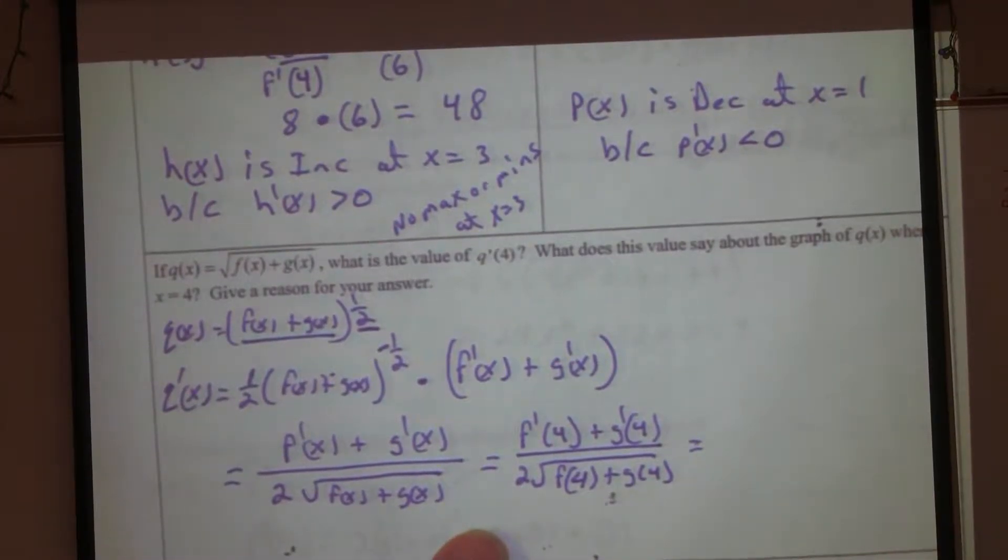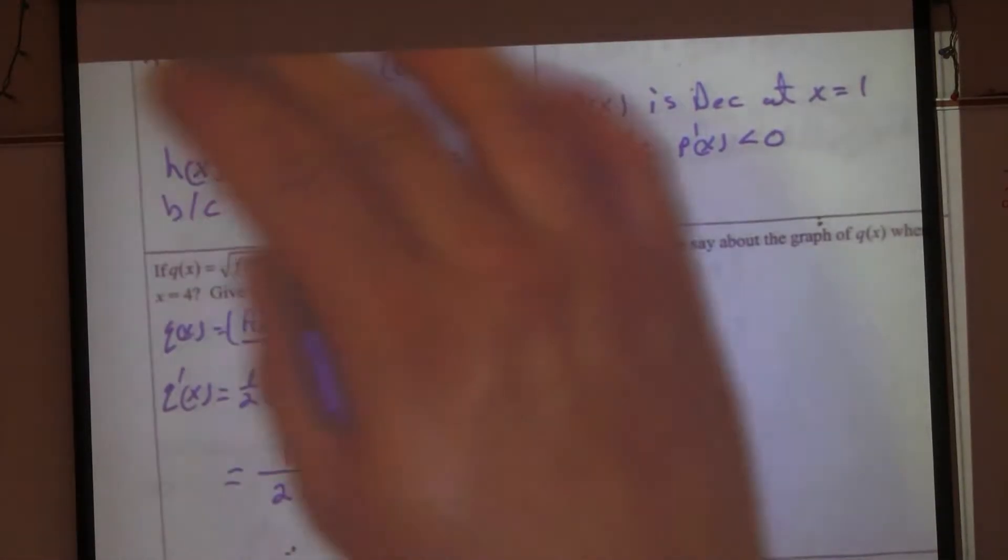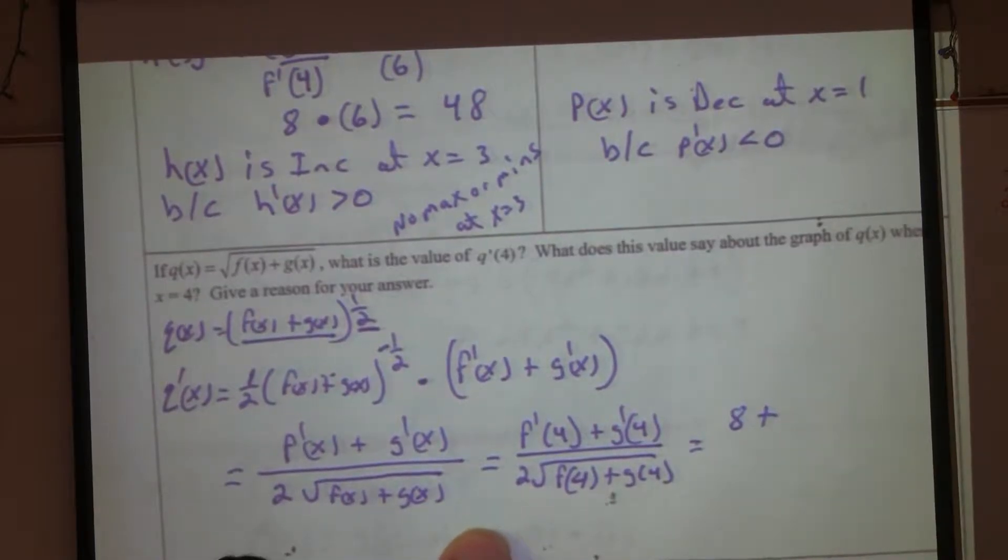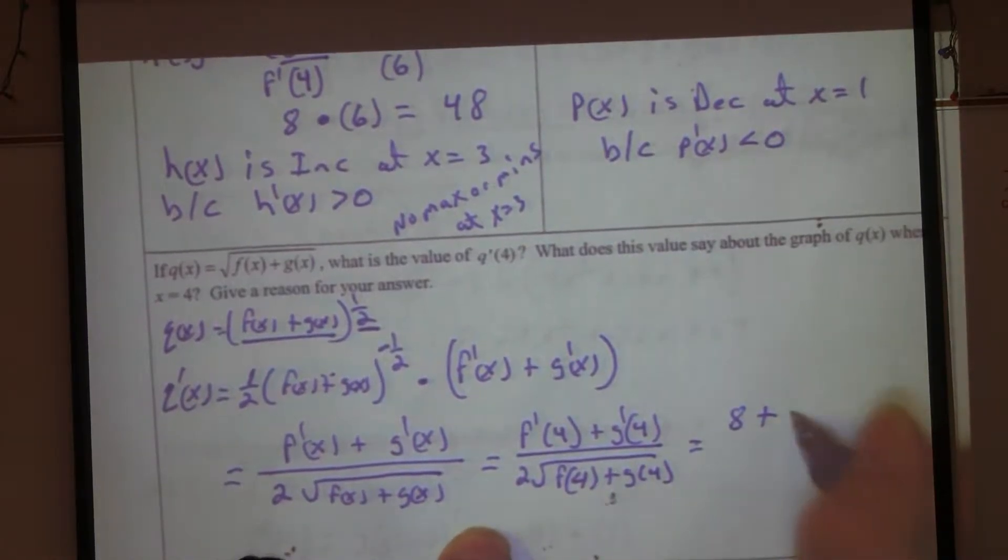What's f prime at 4? Go to 4 or go to f prime? 8. Plus, what's g prime at 4? Negative 2.